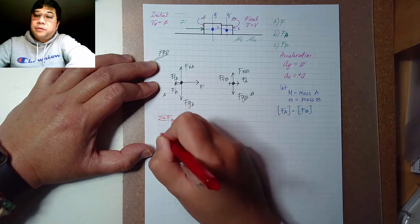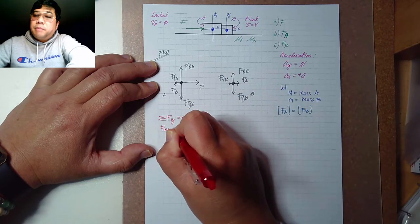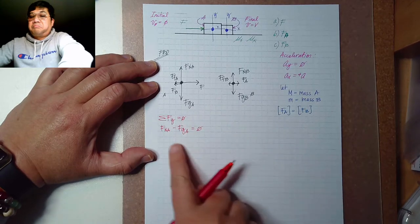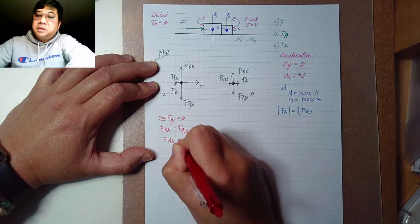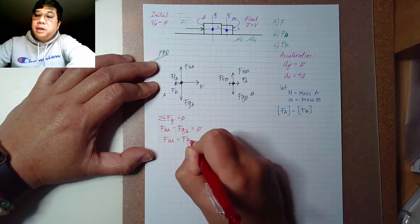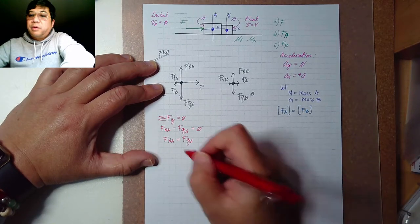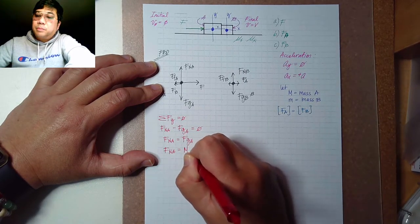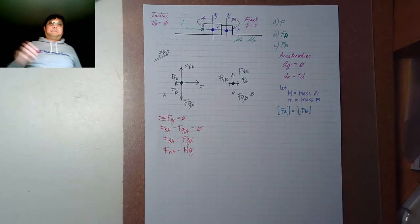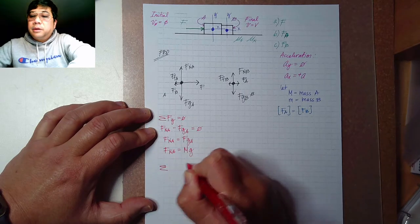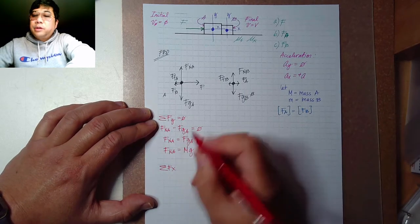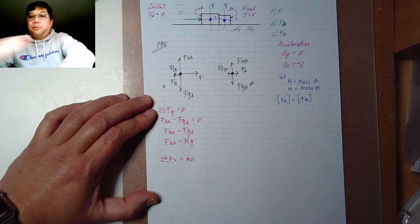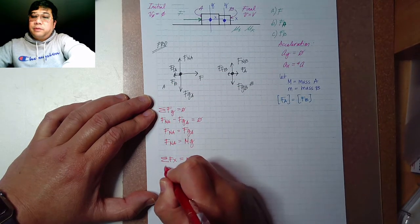For the y-axis of block A, the summation of forces equals zero. The normal force of A minus the force of gravity of A equals zero, so the normal force of A equals the gravitational force, which is the mass of A times g, or uppercase M times g. Now for the x-axis, this time the summation is not zero but equals mass times acceleration.